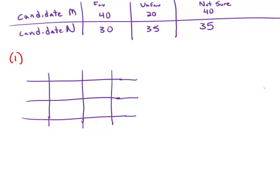So I'm going to create this double matrix just to consider the question favorable for M, yes or no. And we're going to lump together both the unfavorables and the not sures as no. And favorable for N. And again, yes, no.